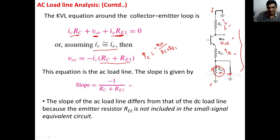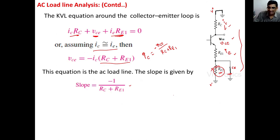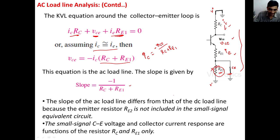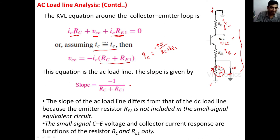The slope of the AC load line differs from the DC load line because Re2 is not included in the small-signal equivalent circuit — the emitter bypass capacitor Ce is short-circuited, removing Re2's effect. The DC load line slope is −1/(Rc + Re1 + Re2) and the AC load line slope is −1/(Rc + Re1). The AC load line applies only for AC input signals; the DC load line applies only for DC signals.